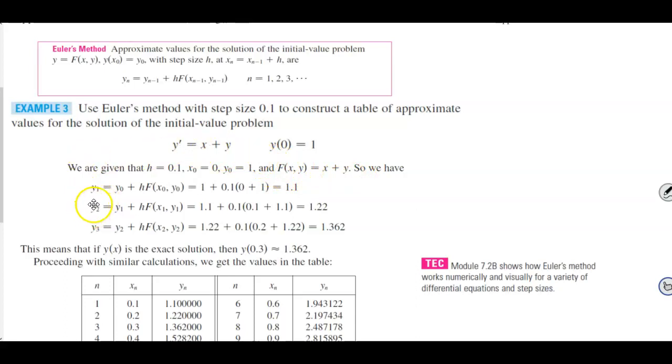So for the first one, y subscript 1, we're going to have the initial y plus h times f of x naught, y naught. We end up getting 1 plus 0.1 times (0 plus 1), which is equal to 1.1.